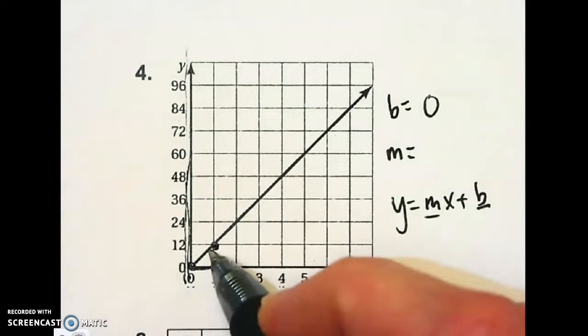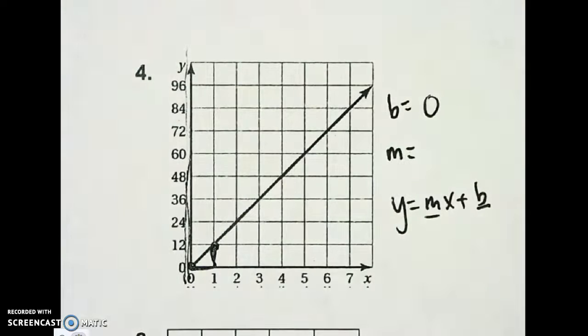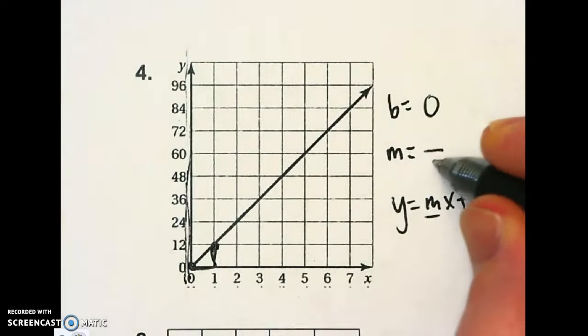So, I'm going to make a triangle over and up. This is not one and one, like everybody thinks. You've got to check your scale, guys. These are going by ones on the x, so I know I can put my run as one.